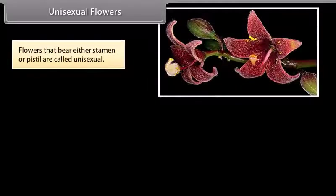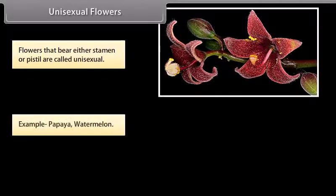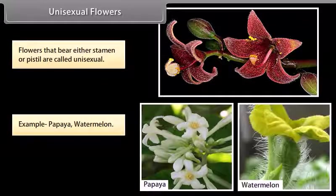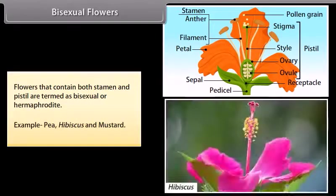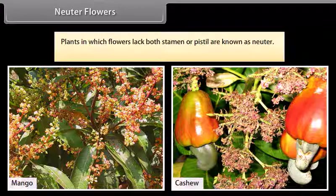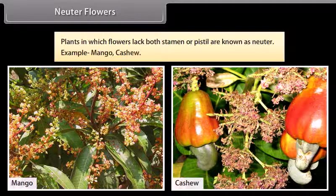Flowers that bear either stamen or pistil are called unisexual flowers. Examples include papaya and watermelon. Flowers that contain both stamen and pistil are termed bisexual or hermaphrodite. Examples include pea, hibiscus, and mustard.